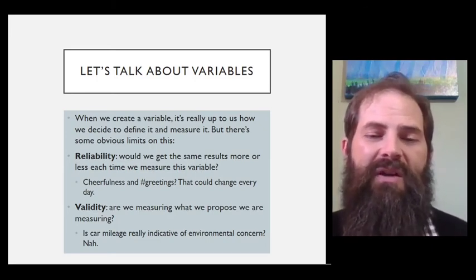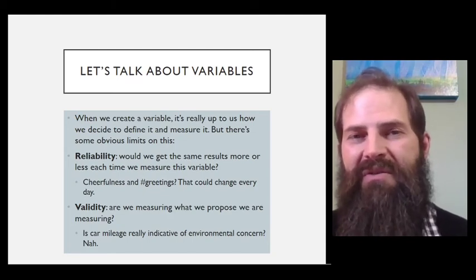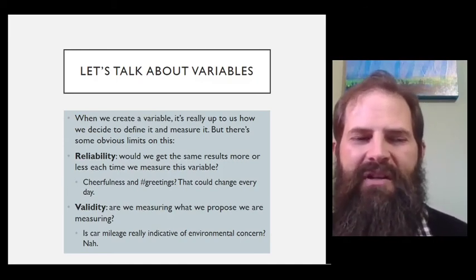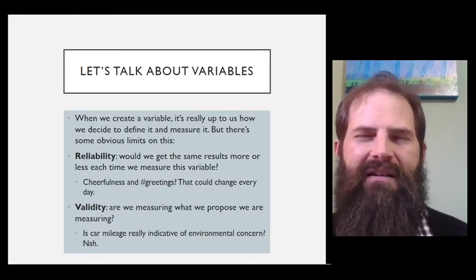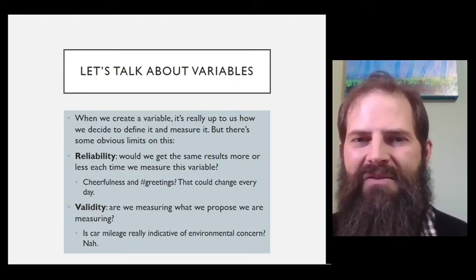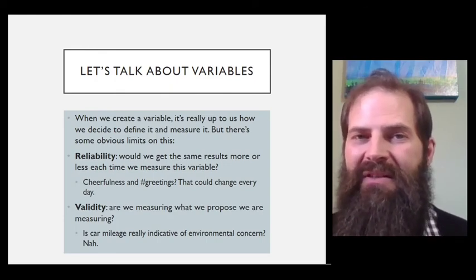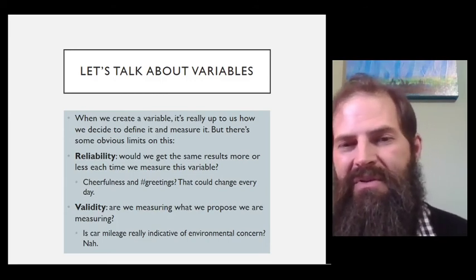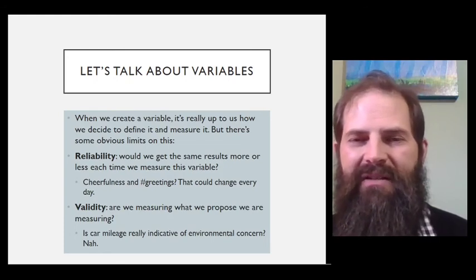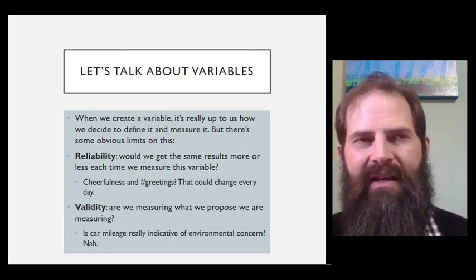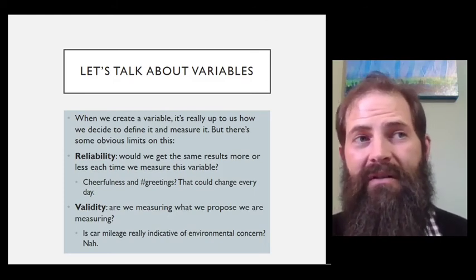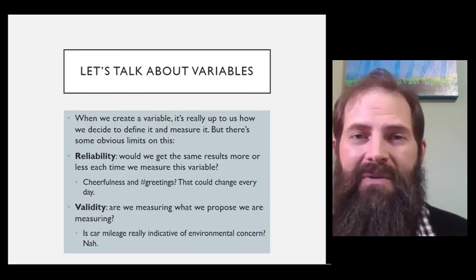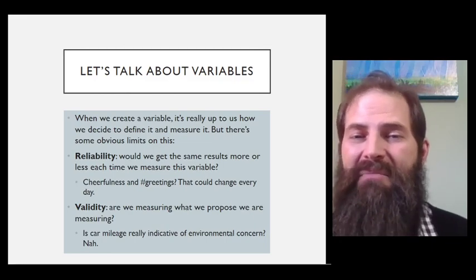Validity is another one too, because we want to make sure we're actually measuring what we propose we're measuring. Let's go back to our car example where we're interested in climate change and measuring your support of climate change by the number of miles that you drive in your car. Is car mileage really indicative of what we're trying to measure there? I mean, there's an argument that it could be linked, but it's probably not. In fact, we could do something like what we call a Likert item where people strongly agree to strongly disagree with statements about climate change. And that might be far more effective. You might give them a statement like, I feel climate change is a real problem. Do you strongly disagree, disagree, neutral, agree, or strongly agree with that statement? That would probably be more valid measurement of what you're trying to get at.